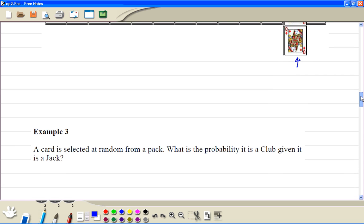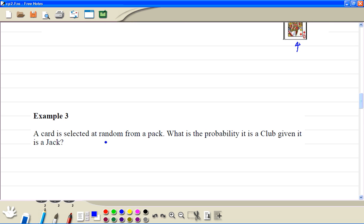Let's do example 3. Similar situation. So the probability is a club and a jack - the probability is 1 out of 52. The probability of a jack, there are 4 out of 52.